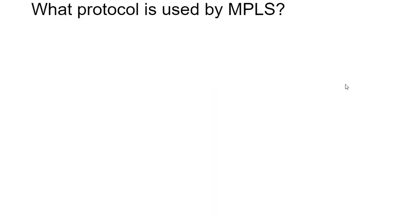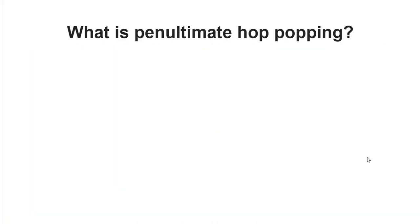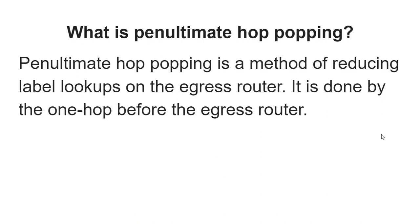Question 10: What protocol is used by MPLS? Answer: MPLS utilizes either the Tag Distribution Protocol or Label Distribution Protocol for label distribution. Question 11: What is penultimate hop-popping? Answer: Penultimate hop-popping is a technique that reduces label lookups on the egress router, typically performed one hop before reaching the egress router.